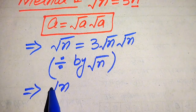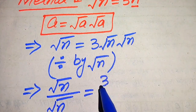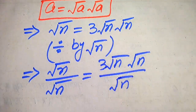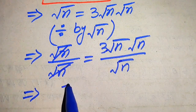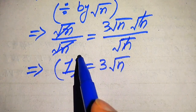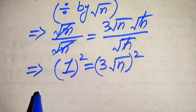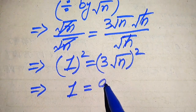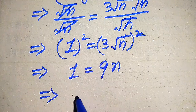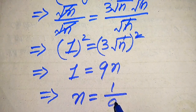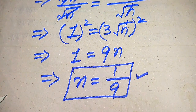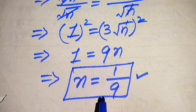Now we divide both sides by square root of n. The left side gives 1, and on the right side one square root of n cancels, leaving 3 times square root of n. Squaring both sides, the square of 1 is 1, the square of 3 is 9, and the square root of n squared gives n. Moving 9 to the right-hand side, we get n equals 1 over 9. This confirms the value from the first method.